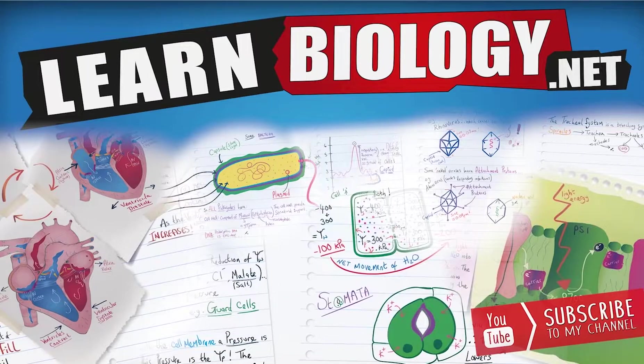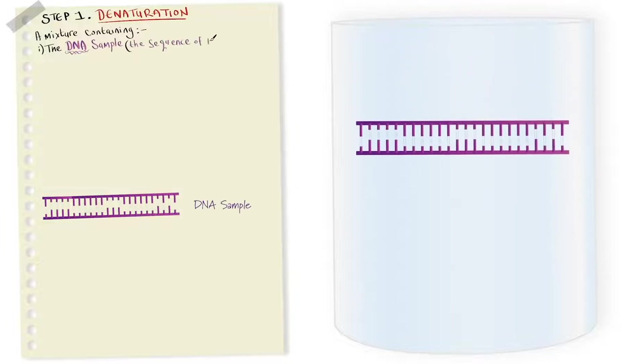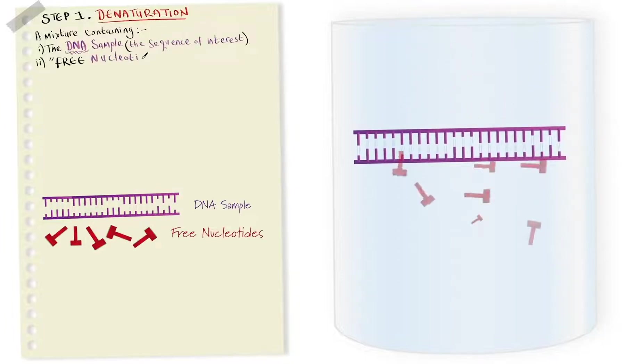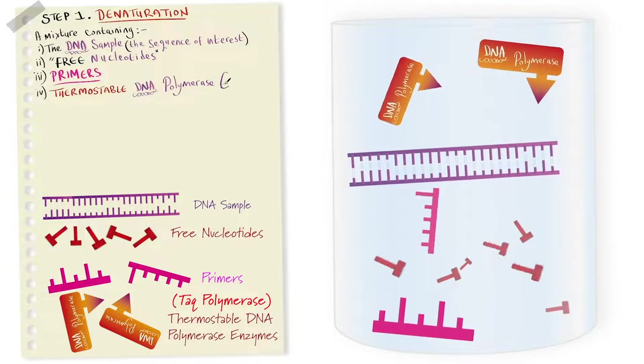Step one, denaturation. We're going to have a mixture containing the DNA sample or sequence of interest, some free nucleotides, we need the primers and thermostable DNA polymerase enzymes.